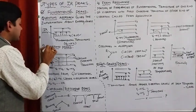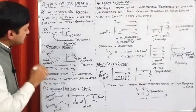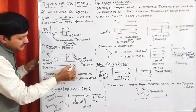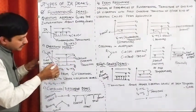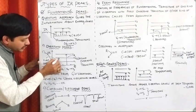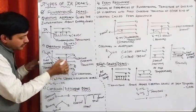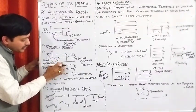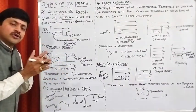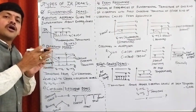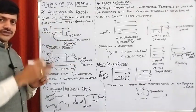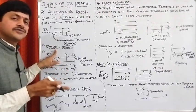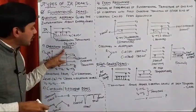The next type is overtone peaks. In this situation, we have the vibrational levels. The particle shifts from V0 to V1, or V0 to V2, and so on. Except for the V0 to V1 transition, all the remaining higher energy level transitions are commonly called overtone transitions. The peaks arising from overtone transitions are commonly called overtone peaks.